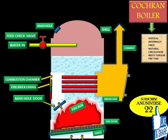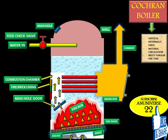Now we will discuss the working of the Cochrane Boiler. Coal is fed into the grate through the fire door and burned. The ash formed during burning is collected in the ash pit, which is situated at the bottom of the boiler just below the grate, and is then removed manually. The gases from the grate pass through the flue pipes to the combustion chamber.